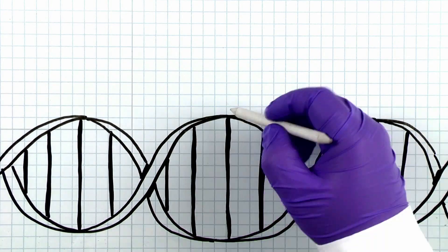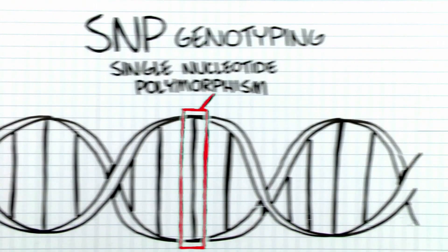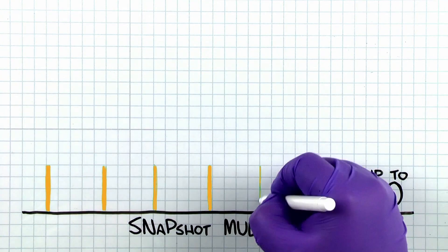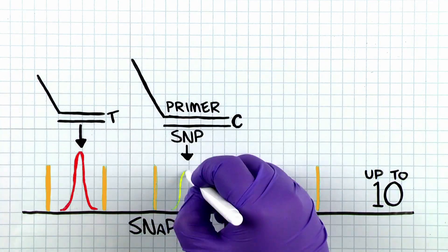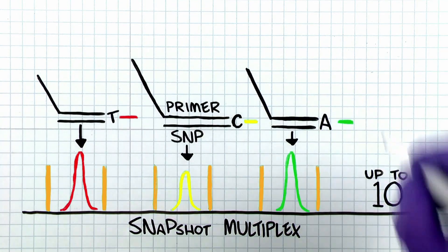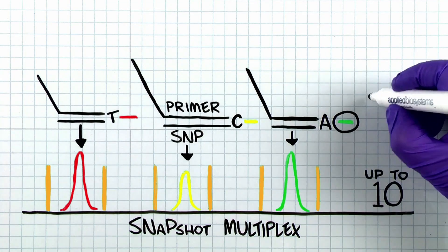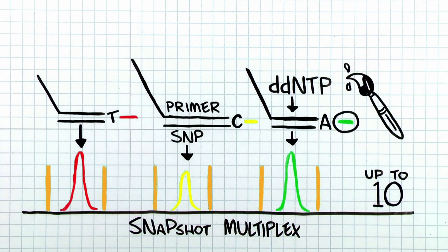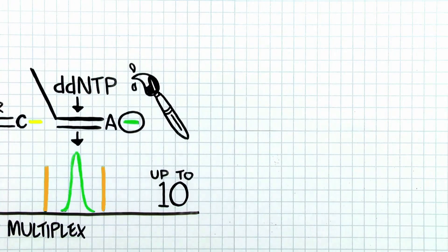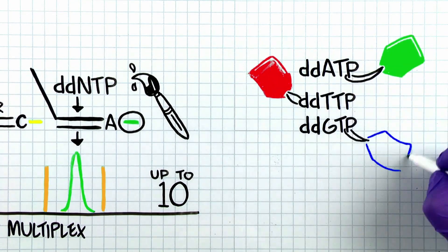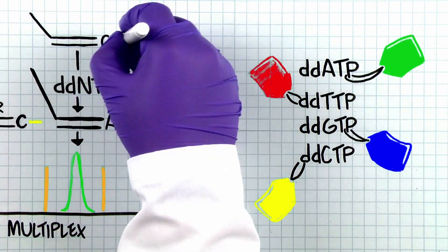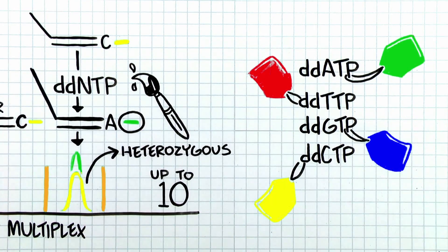One great example application is single nucleotide polymorphism, or SNP genotyping. The Snapshot Multiplex Kit can investigate up to 10 SNP markers simultaneously by using primers of different lengths. The primers are designed to anneal to the sequence adjacent to the 10 different SNPs. Once the primer anneals, single base extension occurs by the addition of a complementary dye terminator, or ddNTP, to the annealed primer. Each of the four ddNTPs is fluorescently labeled with a different color dye, resulting in marker fragments for the different SNP alleles that are all the same length but vary by color.